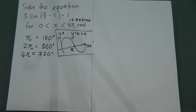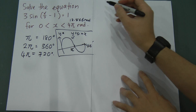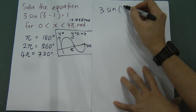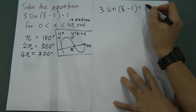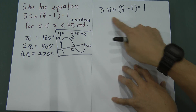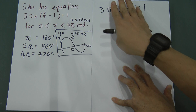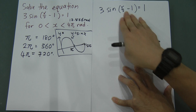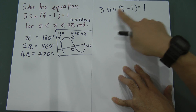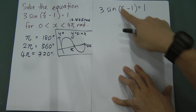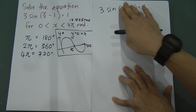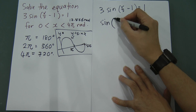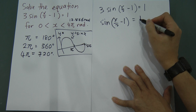Now let's start solving the equation. We have 3 sin(x/2 minus 1) equals 1. Treat everything inside the sine as one thing — don't touch it first. Move the 3 to the other side. So sine(x/2 minus 1) equals 1 over 3.